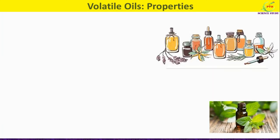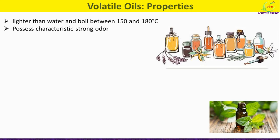Now we will see properties of volatile oils. Volatile oils are lighter than water and boil between 150 to 180 degrees centigrade. They have high refractive indices. Most of the volatile oils are optically active, and their specific rotation is a valuable diagnostic property for the oil.